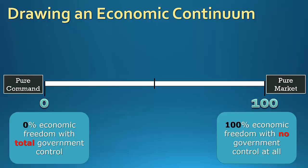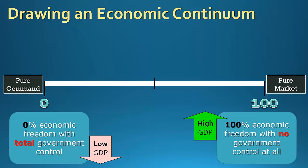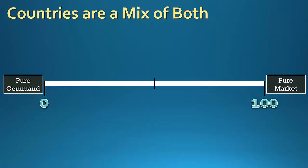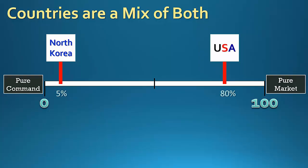It's helpful to remember that any country on the command side of this line is going to have a lower GDP, while countries on the market side will tend to have higher GDPs. Of course, no country is going to be all the way at the pure market end or the pure command end. The United States, for example, we consider a great example of a market economy, but we're only at about 80%. North Korea, one of the last remaining communist countries, should be an example of a pure command economy, but even they are not all the way at zero — they're at about 5%.